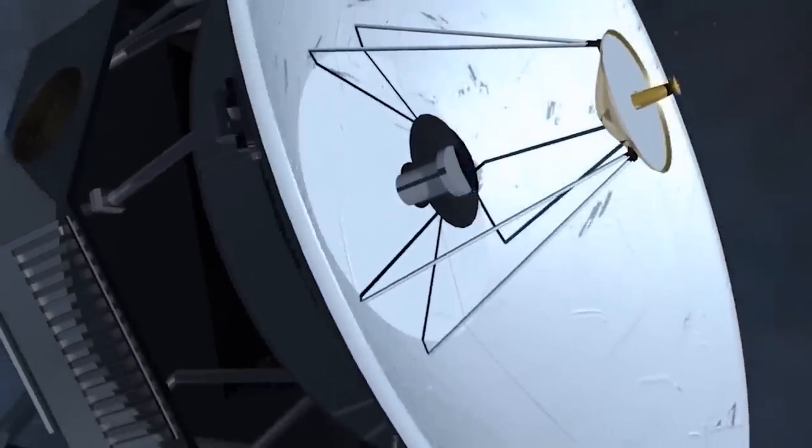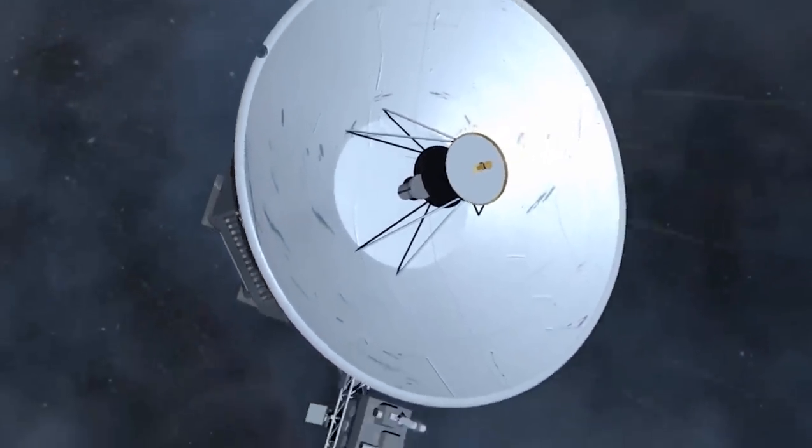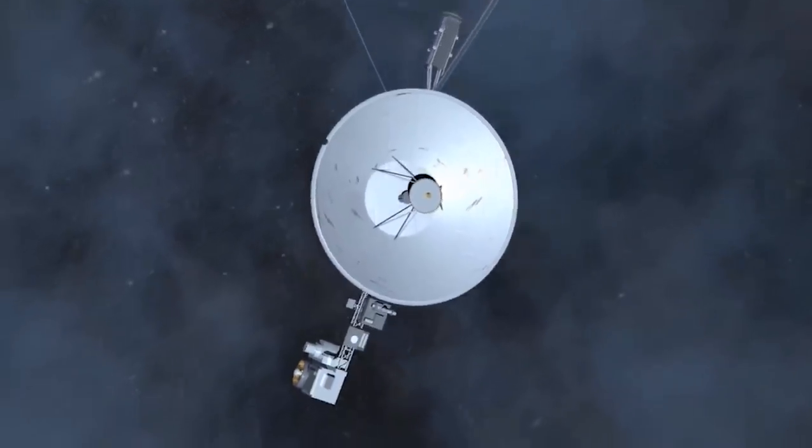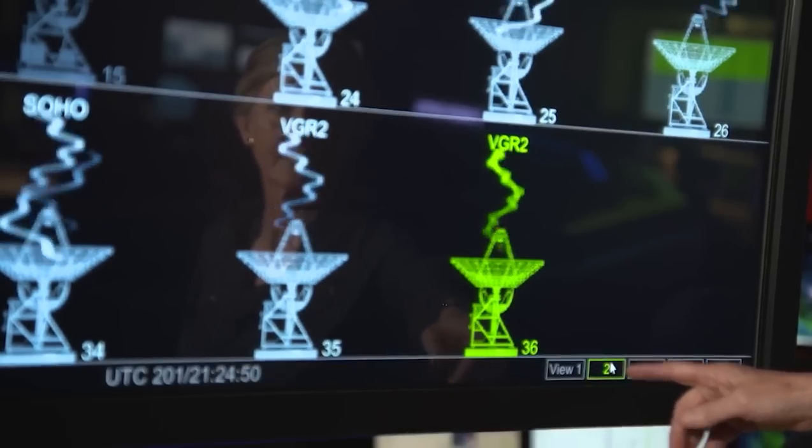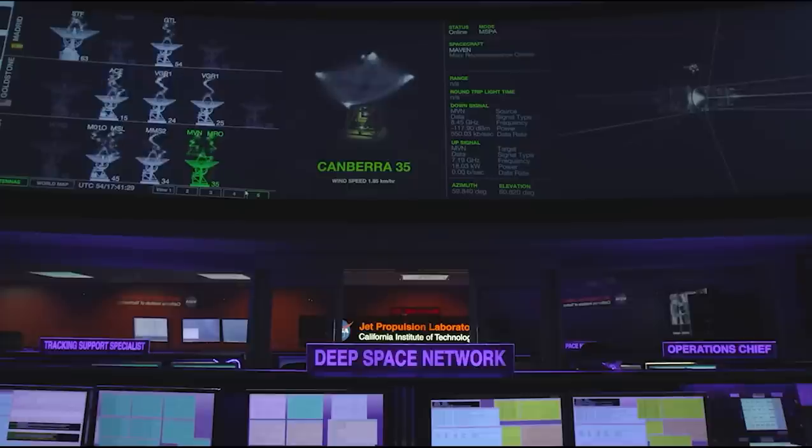Their suggested probe would use technology that is either well-established or advanced, and it would cost about as much as the Parker Solar Probe, which was launched at a cost of $1.5 billion. This suggested spacecraft may pass by a dwarf planet on its way out of the solar system, as the New Horizons mission did on its journey to Pluto for the first time in 2015.